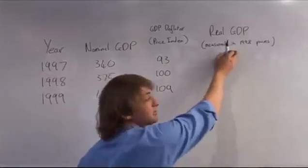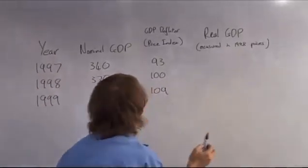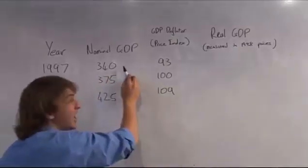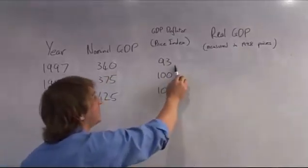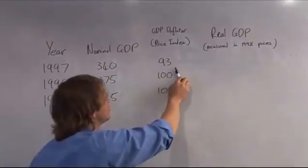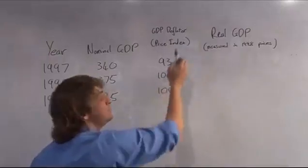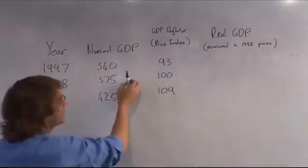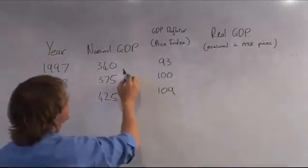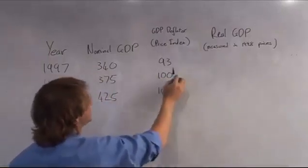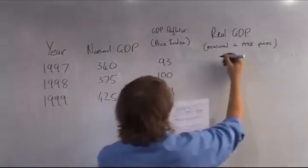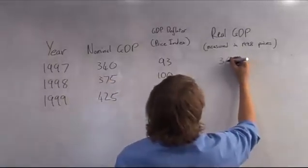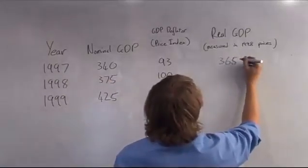Now to work out your real GDP, you have to take your nominal GDP and divide by the price index. This is also known as the GDP deflator. So to work out your real GDP, you take nominal GDP, divide by 93, and you get an answer of 365.6.